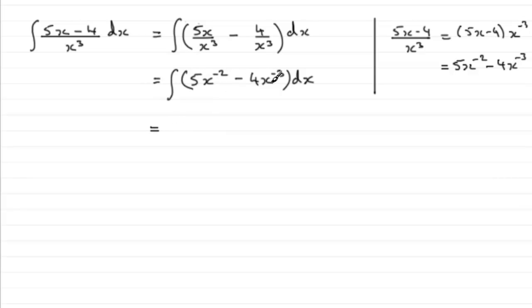But when we get to this stage now, all we need to do is integrate each term in the usual way where we add 1 to the power and divide by the new power. For this first term, we add 1 to the power so we get x^(-1) and divide by that new power.